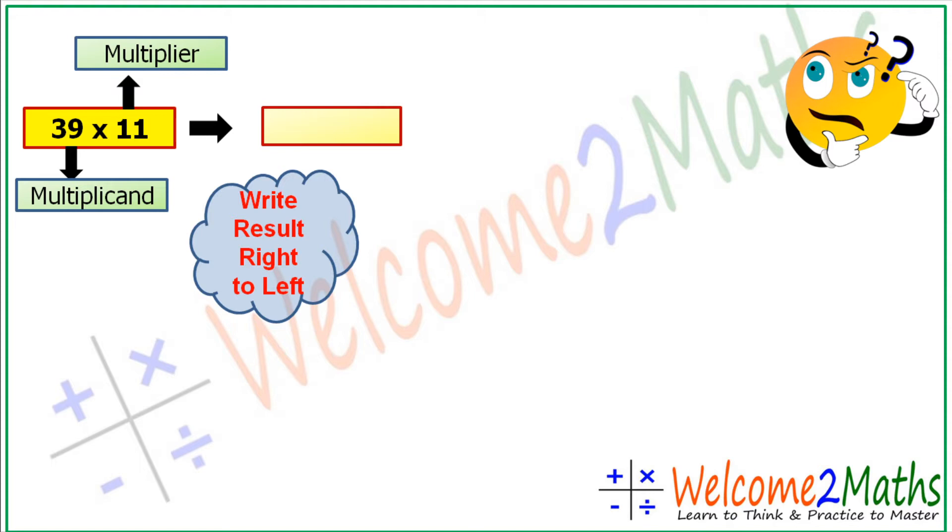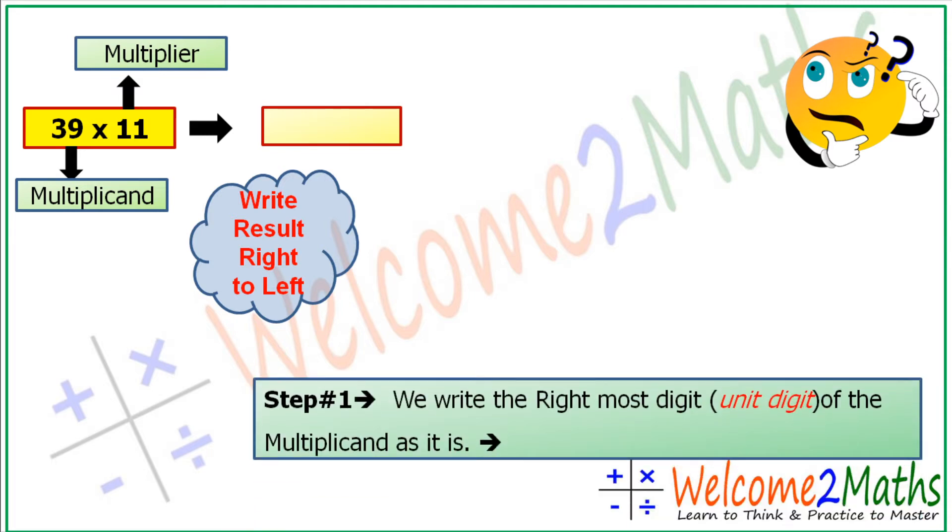Let's do it step by step. Step 1: We write the rightmost digit, that is the unit digit of the multiplicand, as it is. So it's 9. Let's write 9 in the answer box.